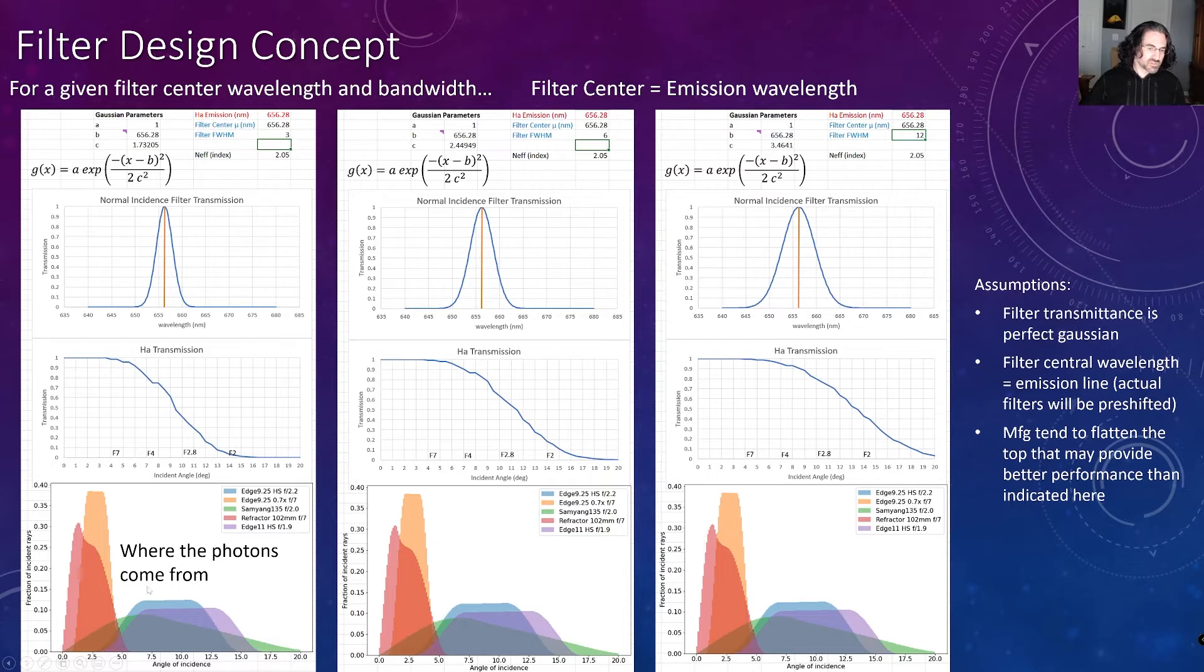Two other optical systems that I have in here is my Edge 9.25 with Hyperstar at F2.2 and an Edge 11 with Hyperstar here in the purple. If we were to go now and consider six nanometer bandwidth filters, that's going to widen our transmission here. And that's going to have the effect of increasing. So we're at 10 degrees, we had about 40% transmission. Now with this wider bandwidth, as we do the blue shifting, we'll end up having about 60% transmittance. Likewise, if we were to go all the way up to 12 nanometers at 10 degrees, now we're up to about 80% transmittance.